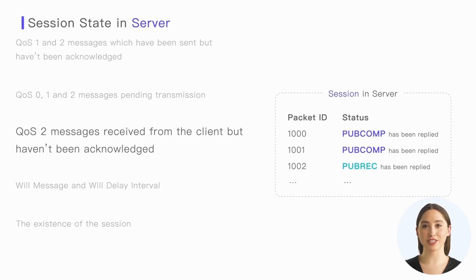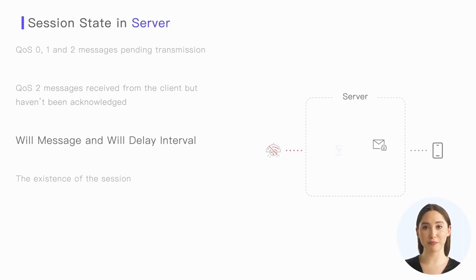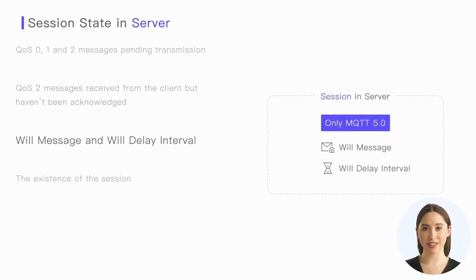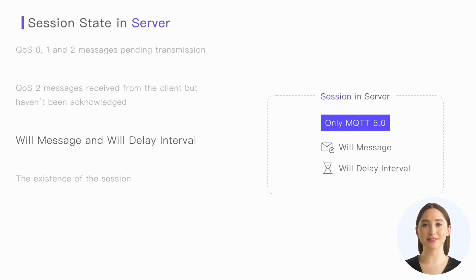This ensures the QoS2 message flow can be resumed correctly after reconnection. Furthermore, to delay the delivery of the will message after the disconnection, the server needs to store the will message and the delay interval. There is a slight difference between MQTT 3.1.1 and 5.0: in 3.1.1, the will message is sent immediately upon disconnection, so it does not need to be stored as part of the session state. We'll learn more about will messages in a later lesson.